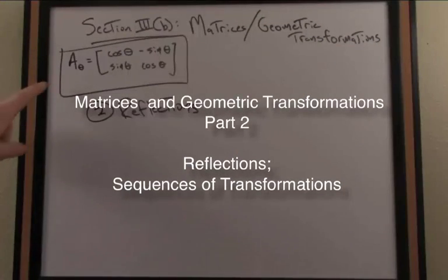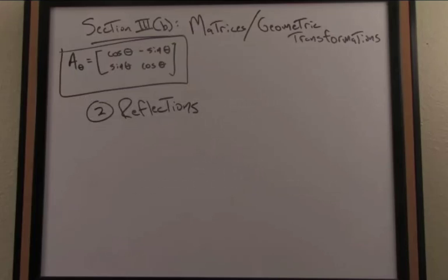There we have our standard matrix representing the linear transformation of this rotation through an angle theta. We could then ask, well how about other types of geometric or common geometric transformations such as reflections?